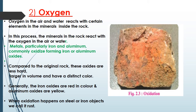Oxygen in the air and water react with certain elements in the minerals inside the rock. Metals, particularly iron and aluminium, commonly oxidize, forming iron or aluminium oxides. When iron gets oxidized it forms iron oxide, and when aluminium gets oxidized it forms aluminium oxide. The color of oxidized iron is a brownish-reddish color (rust), while oxidized aluminium appears yellow.